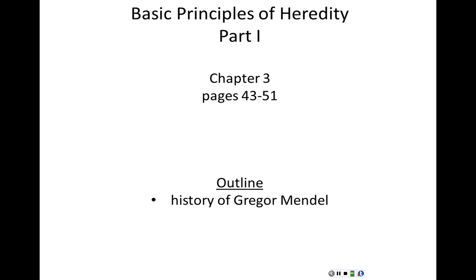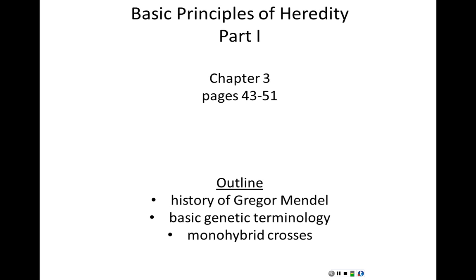Today we're going to start off with a very brief history of Gregor Mendel, the Austrian monk who's responsible for pioneering the early work in genetics. We'll rehash some of the genetic terminology we've already talked about and introduce some new topics. But much more importantly, we will begin going over the true essence, the background principles of genetic inheritance. We call that monohybrid crosses — genetics when you consider one gene or one trait. We'll do dihybrid crosses in the next class, where we look at two different traits simultaneously. So today we'll only be looking at one gene at a time.